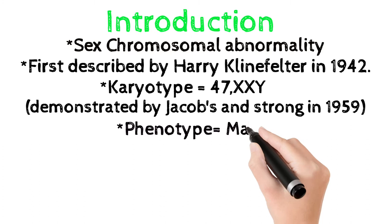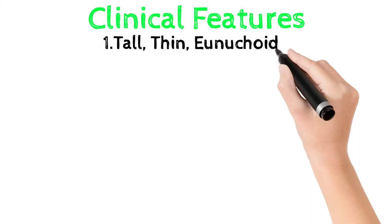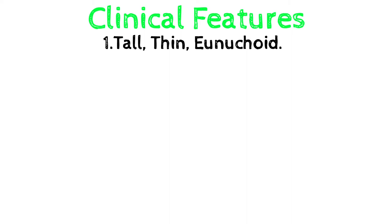Male patient with positive X chromatin in Barr body examination. The patient presents with the following clinical features: he is tall, thin and eunucoid, meaning less developed male sex organs and may depict some female sex characters.